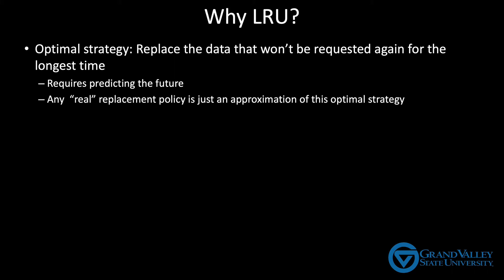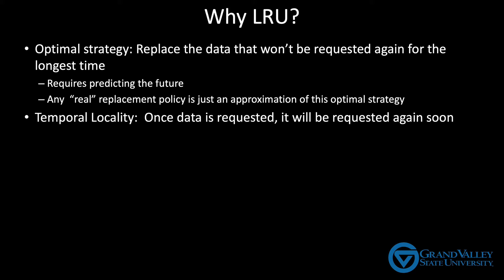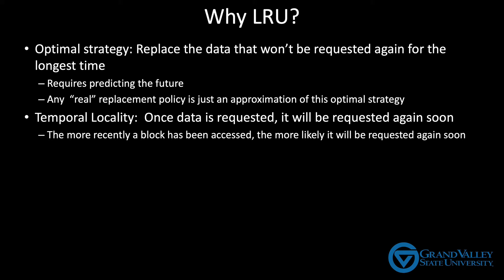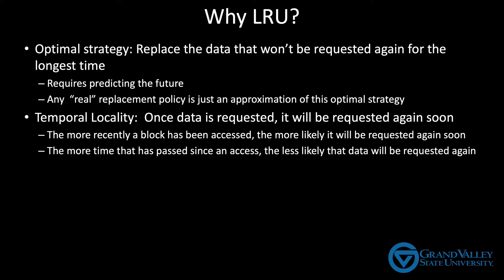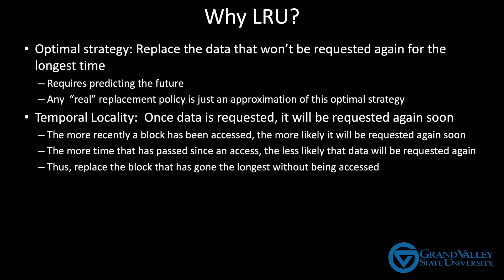The replacement policy of any real cache is just an approximation of this optimum. It turns out that when you consider a wide variety of programs, LRU actually does a really good job of approximating the optimal strategy because it leverages temporal locality. The principle of temporal locality tells us that once data is requested, like once you ask for a variable, it's very likely that that same data will be requested again soon. We don't often access a variable just once. After accessing it for the first time, it's usually not long before we access it again. Furthermore, the more recently a block or variable has been accessed, the more likely it is to be requested again soon. The converse is also true: the more time that's passed since you've asked for a variable, the less likely it is that you'll ask for it again. If I haven't requested a particular variable in a long time, the chances are I'm done using it. Therefore, it makes sense to replace the block that's gone the longest without being accessed.